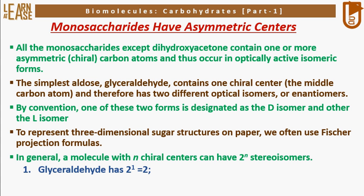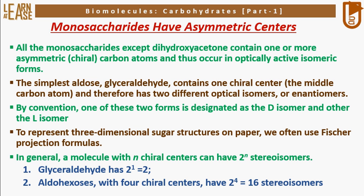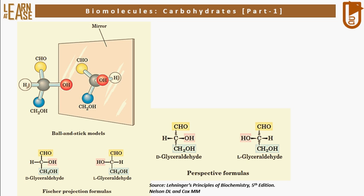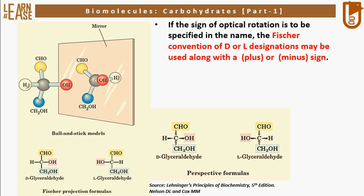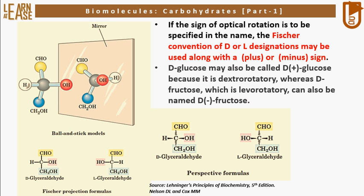Glyceraldehyde has 2^1 = 2 stereoisomers. Aldohexoses, with four chiral centers, have 2^4 = 16 stereoisomers. The image shows the D- and L-isomers of glyceraldehyde represented using ball-and-stick model, Fischer projection formulas, and perspective formulas. If the sign of optical rotation is to be specified in the name, the Fischer convention of D or L designations may be used along with a plus or minus sign. D-glucose may also be called D(+)-glucose because it is dextrorotatory, whereas D-fructose, which is levorotatory, can also be named D(−)-fructose.